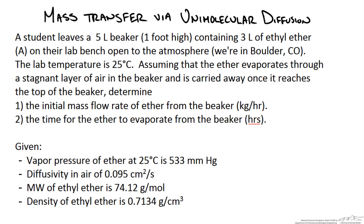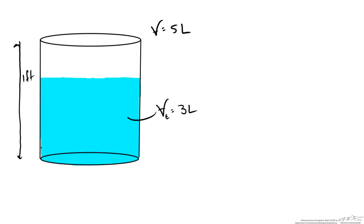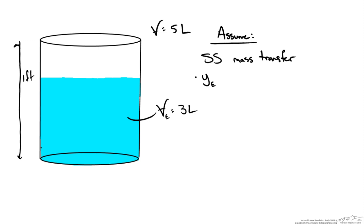The first place to start with any problem, especially mass transfer problems, is to draw a picture of our system. We are going to assume a couple of things to make this problem easier: one, that we have steady state mass transfer; two, that the mole fraction of ether in the air, y_e, adjacent to the liquid surface can be determined using Raoult's law. At the surface of the container, air carries away the ether, so we say the mole fraction of ether at the top of the container is equal to zero.